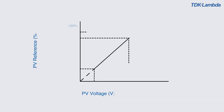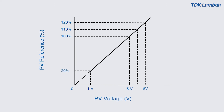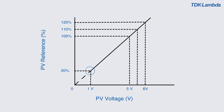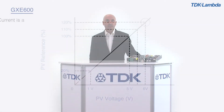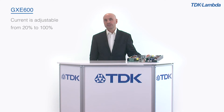The diagram shows the external programming voltage, PV, adjusting the output voltage from 20% to 120% of the nominal 24 or 48V output. Current is adjustable from 20% up to 100%.